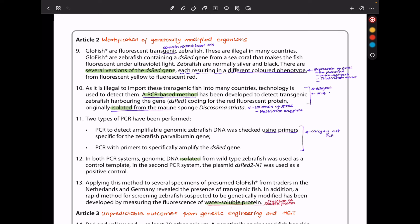So they say glowfish are fluorescent transgenic zebrafish. These are illegal in many countries. Glowfish are zebrafish containing a DsRed gene from a sea coral that makes the fish fluorescent under ultraviolet light. Zebrafish are normally silver and black. There are several versions of that DsRed gene, each resulting in a different colored phenotype, from fluorescent yellow to fluorescent red.